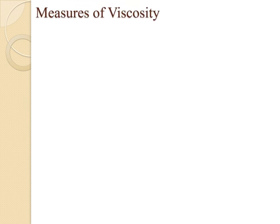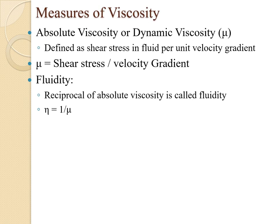Absolute viscosity or dynamic viscosity, denoted by mu, is defined as shear stress in a fluid per unit velocity gradient: mu = shear stress / velocity gradient. A new concept here is fluidity. Fluidity is the reciprocal of absolute viscosity, denoted by eta, so eta = 1/mu.